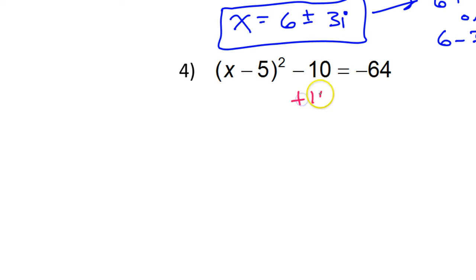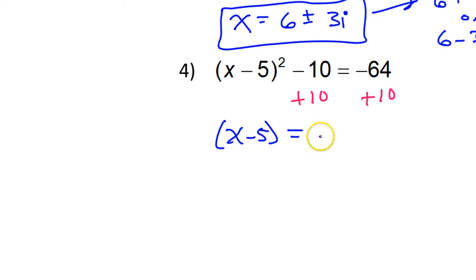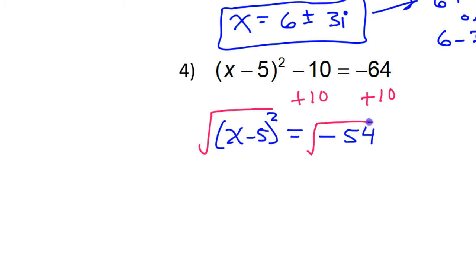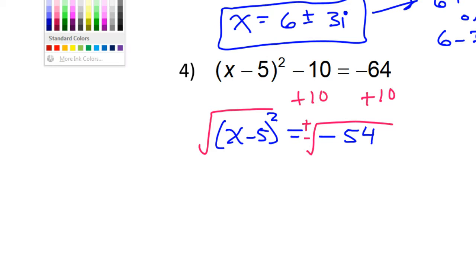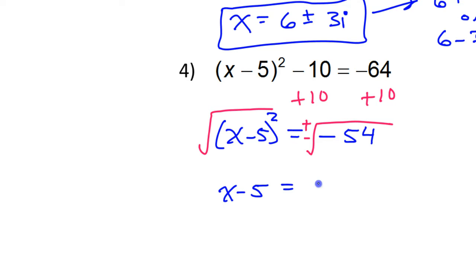Number 4: we're going to add 10 to both sides first. So that leaves us with x minus 5 squared is equal to negative 54. Now we take the square root of both sides to unsquare this. When you take the square root of both sides, the solution is plus or minus. So now I have x minus 5 is equal to plus or minus. I know I'm going to have i because of the negative. The square root of 54 is 3 radical 6, and the i goes right in the middle.